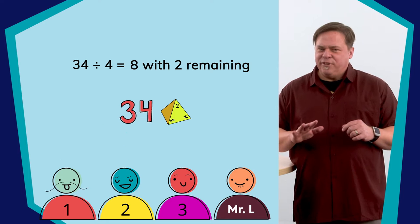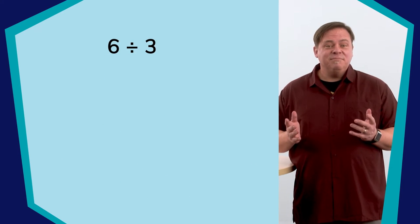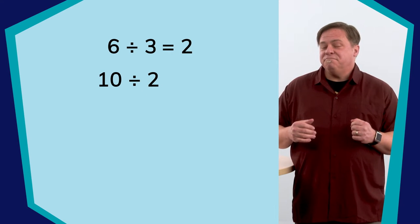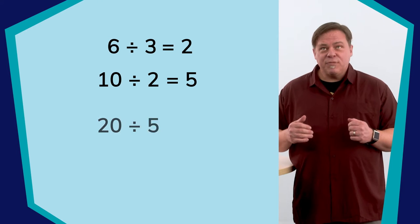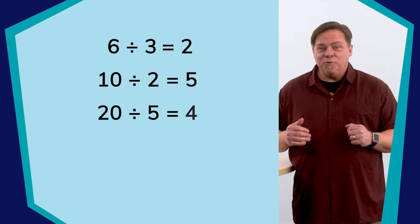Here are some simpler examples. Six divided by three equals two. Ten divided by two equals five. Twenty divided by five equals four.